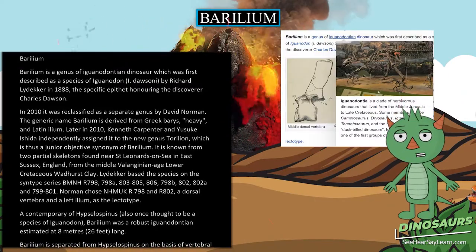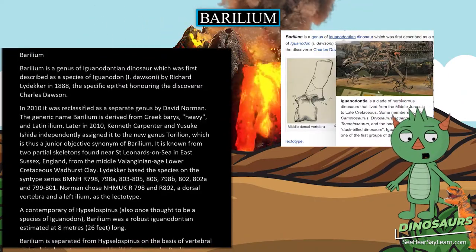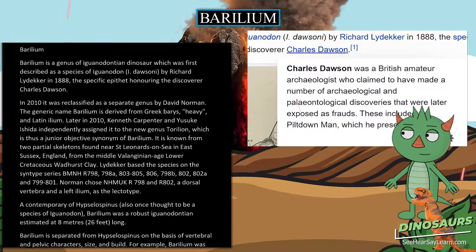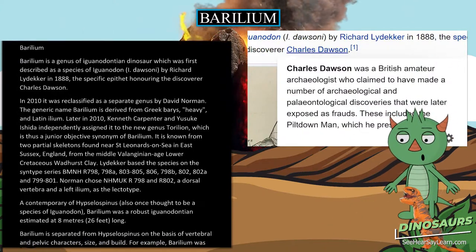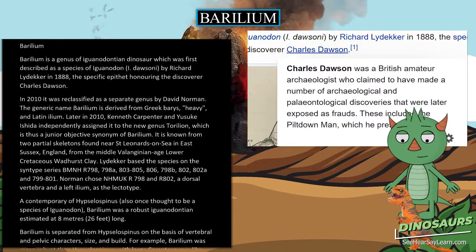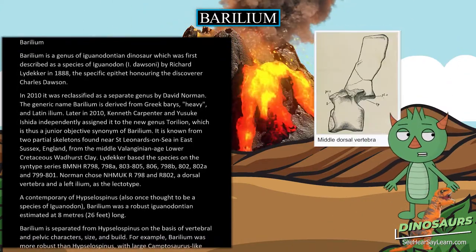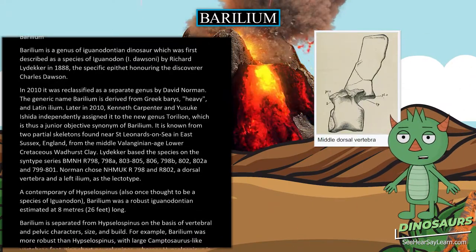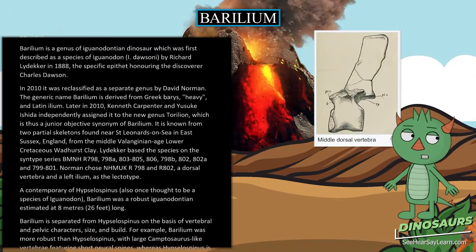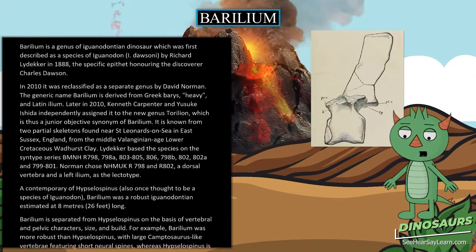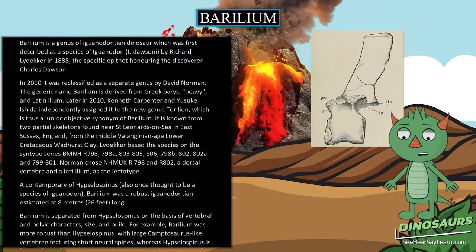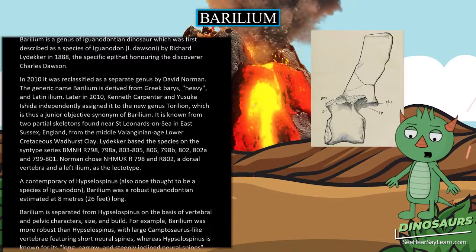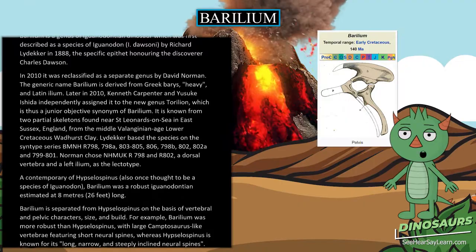Lydekker based the species on the syntype series BMNHR 798, 798A, 803-805, 806, 798B, 802, 802A, and 799-801. Norman chose NMACR 798 and 802, a dorsal vertebra and a left ilium, as the lectotype.